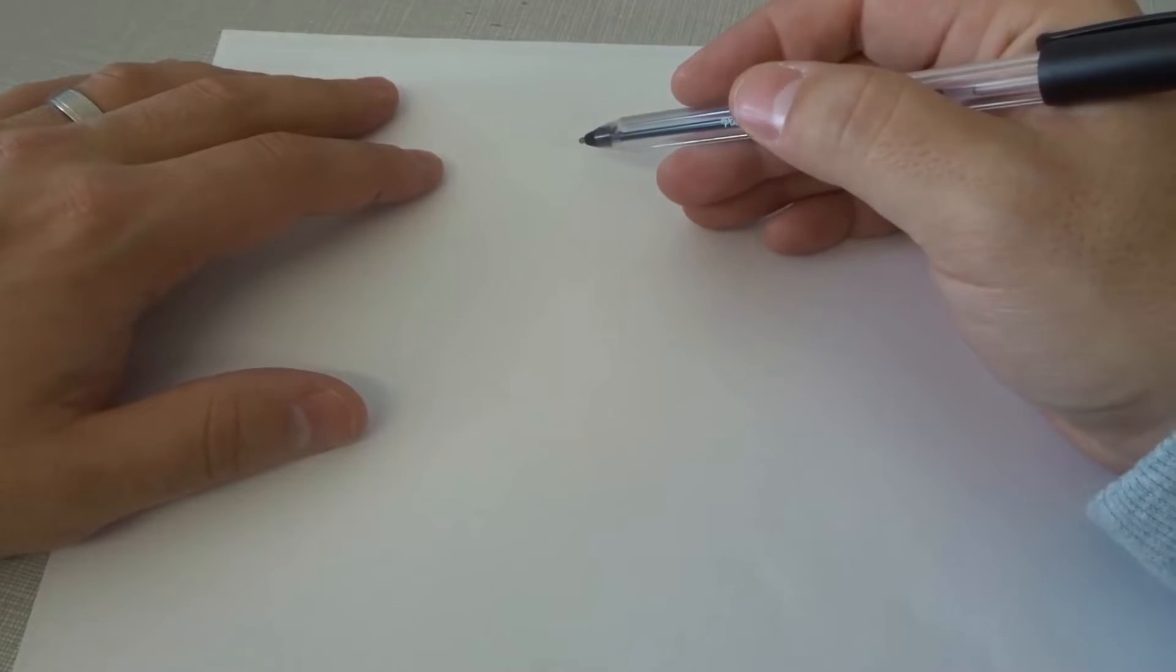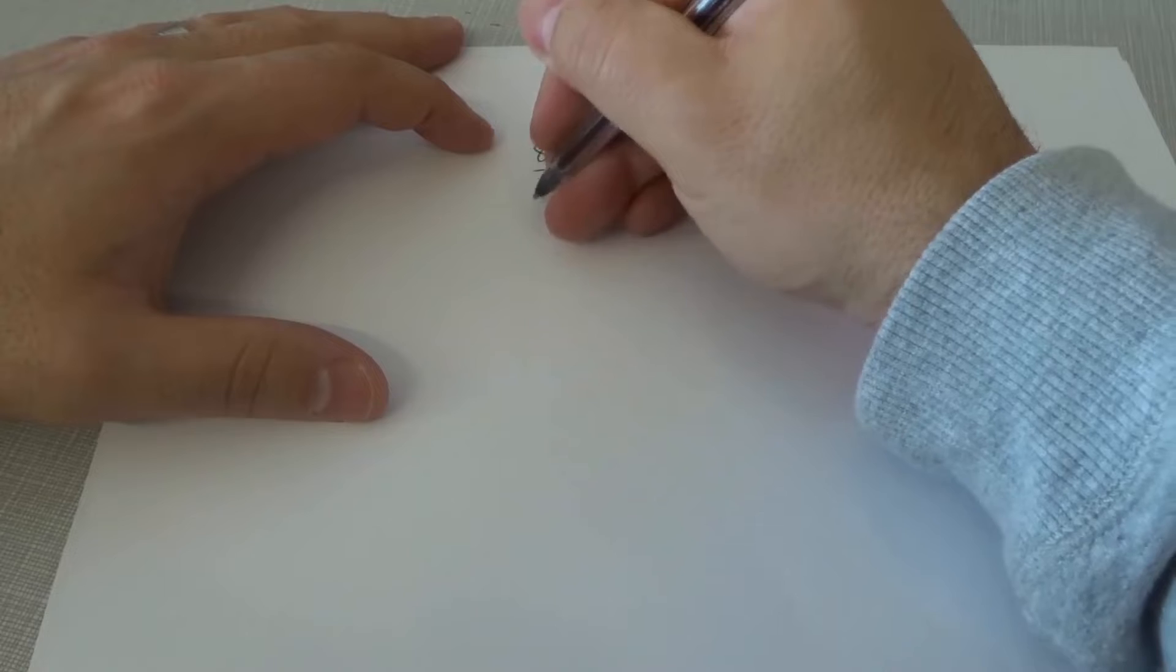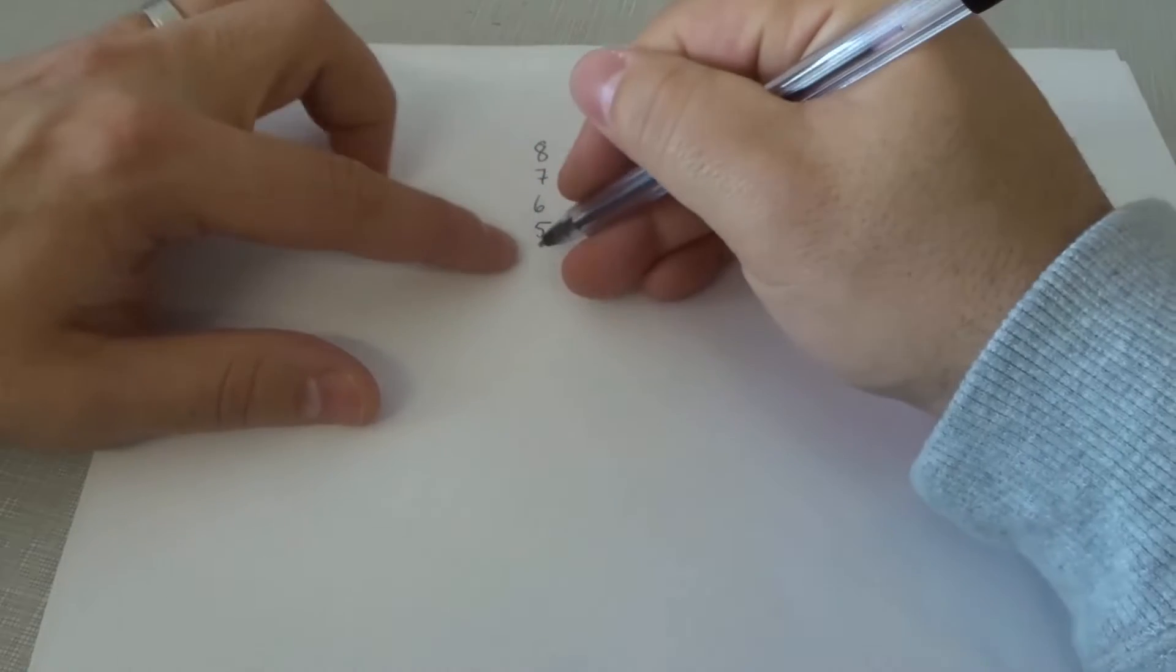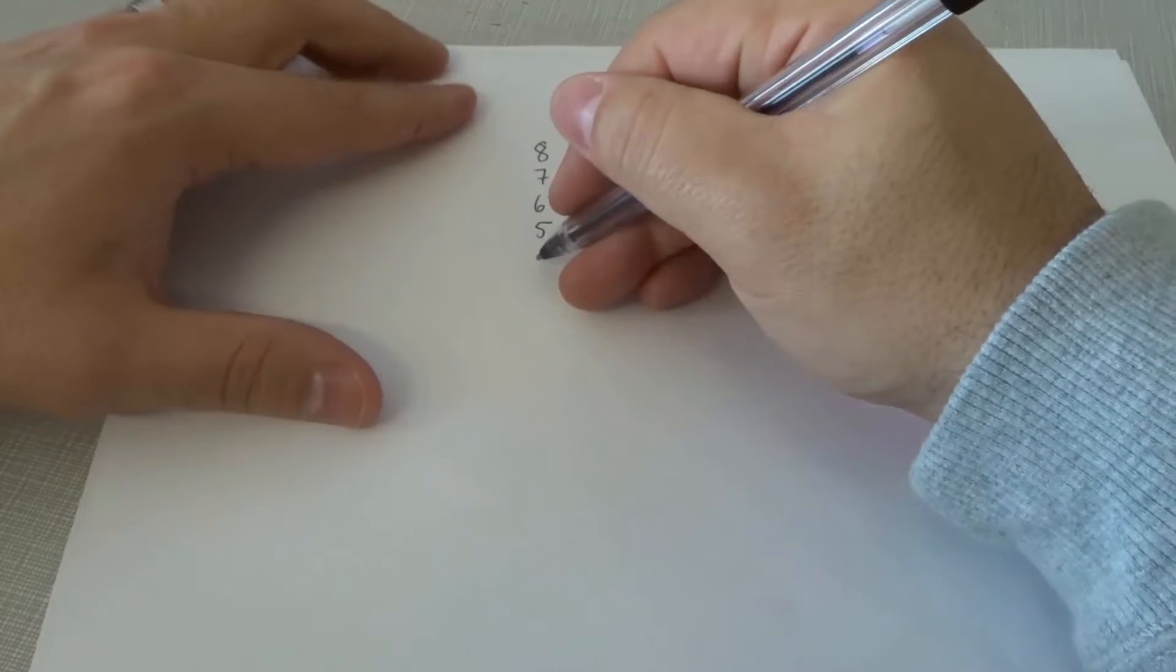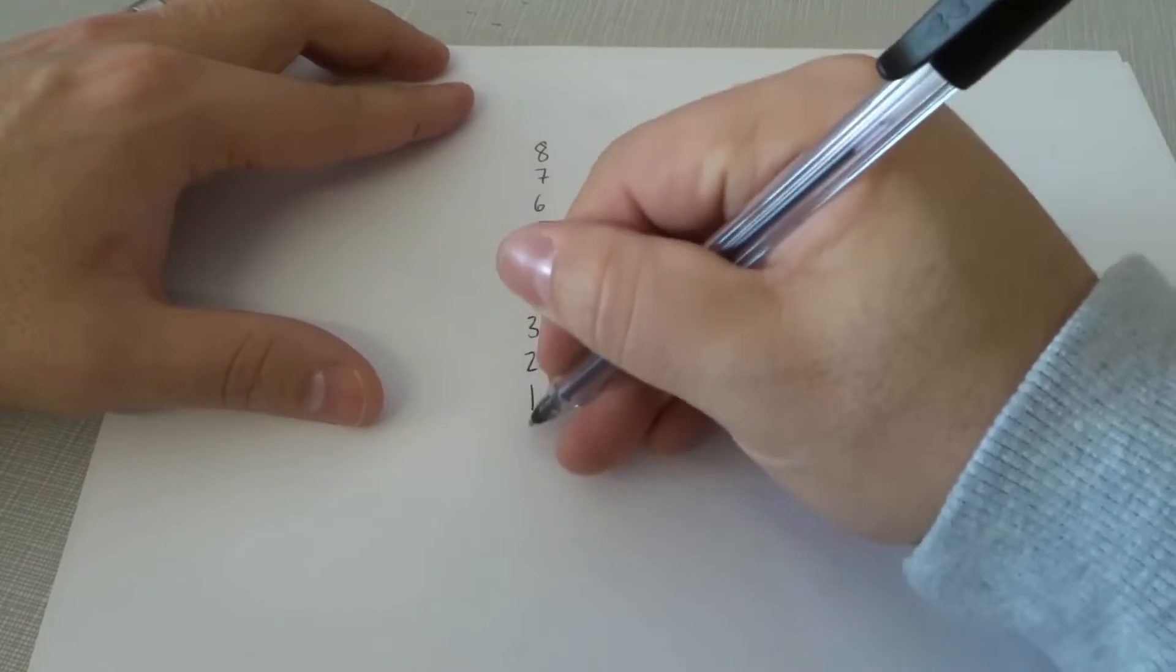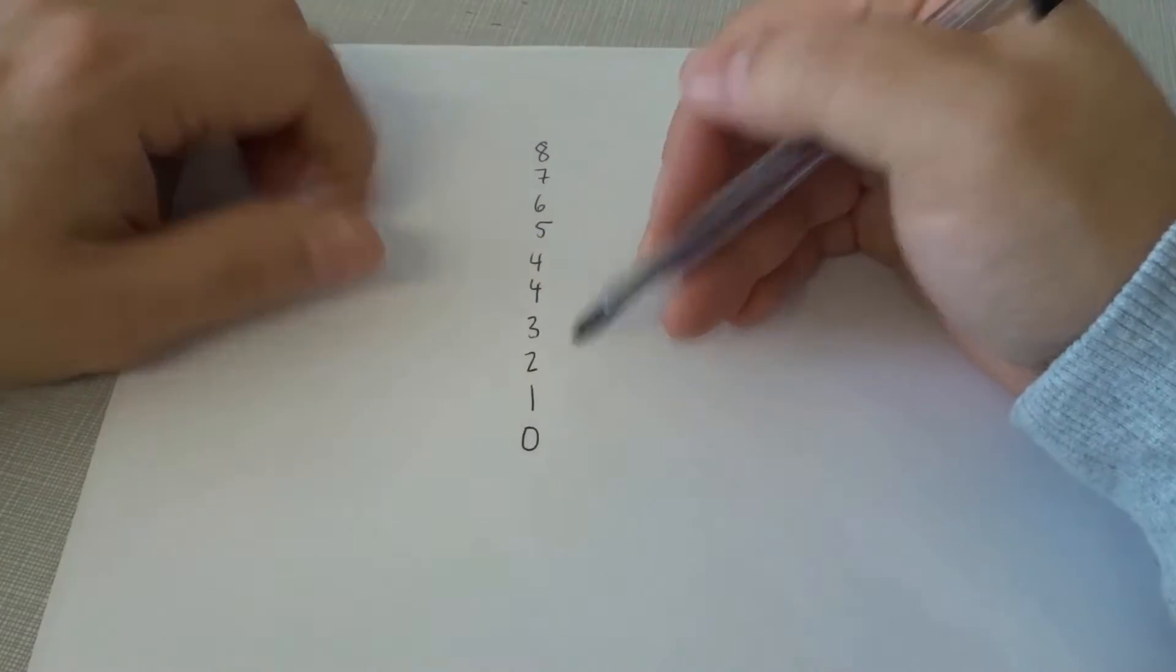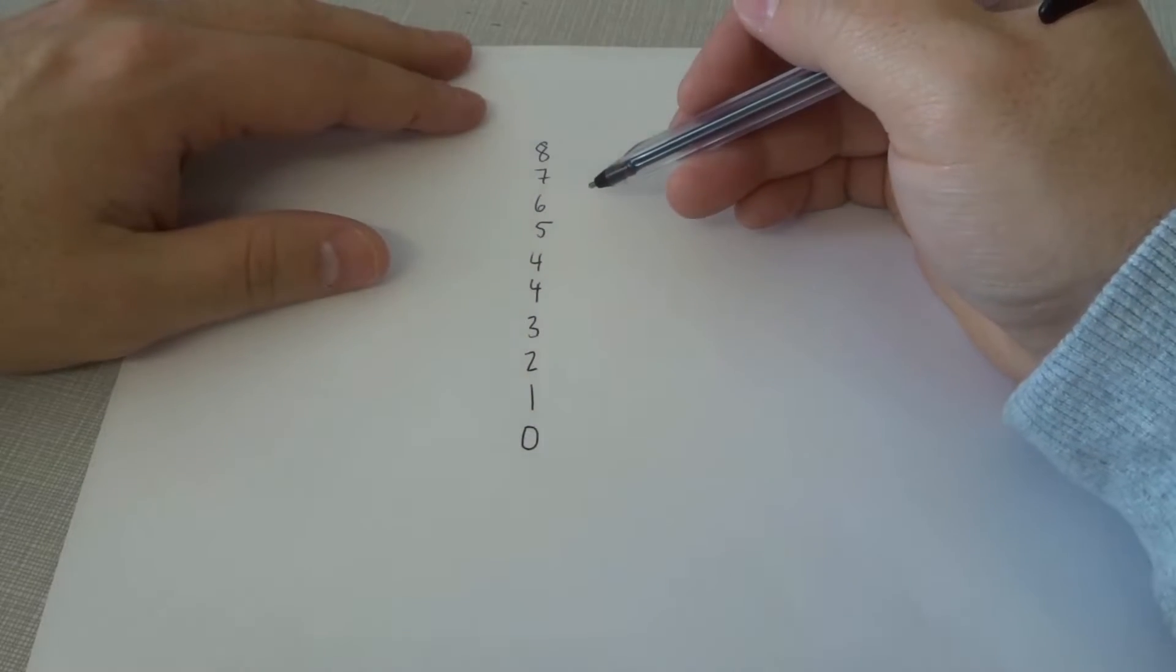We're going to start off by counting down from 8 to 0. Now we're going to start off by writing the numbers on top of each other: 8, 7, 6, 5, and with the number 4 you're actually going to write it twice, so 4, 4, 3, 2, 1, 0. Very simple and straightforward so far.